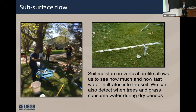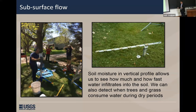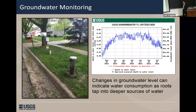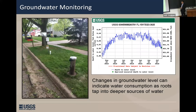We're looking at subsurface flow in a couple of different ways. One is through a segmented soil moisture vertical profile, which will allow us to see how water infiltrates and how quickly, and perhaps see how vegetation and roots are absorbing and taking up some of that water in the soil, at least in the unsaturated zone. We're also looking at groundwater levels — we have groundwater wells at 10 locations throughout the catchments down to about 12 to 15 feet. This allows us to see if those trees are tapping into deeper sources of water.